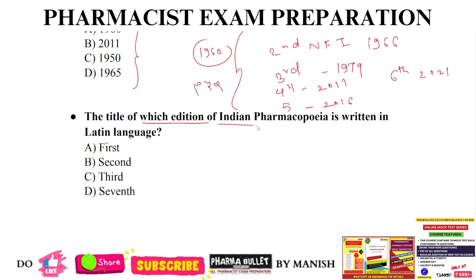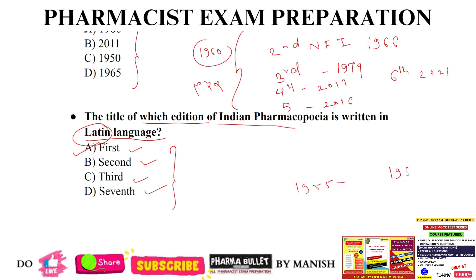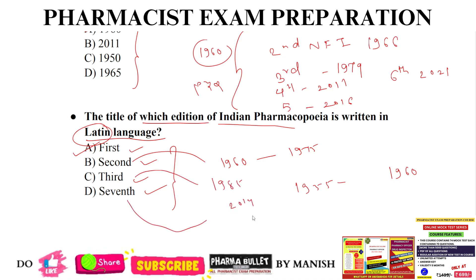Next question: the title of which edition of Indian Pharmacopeia is written in Latin language? Options: first, second, third, or seventh? The correct answer is option A, the first edition, published in 1955. Supplement to first IP: 1960. Second edition: 1966, supplement 1975. Third IP: 1985. Seventh edition of IP was published in 2014.